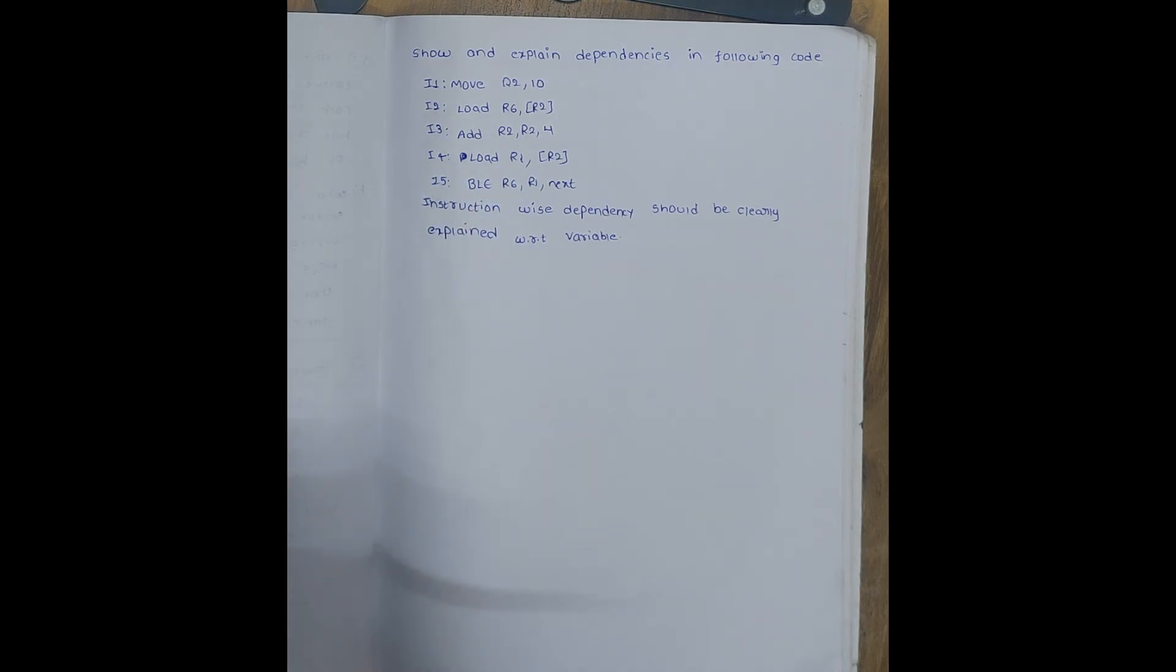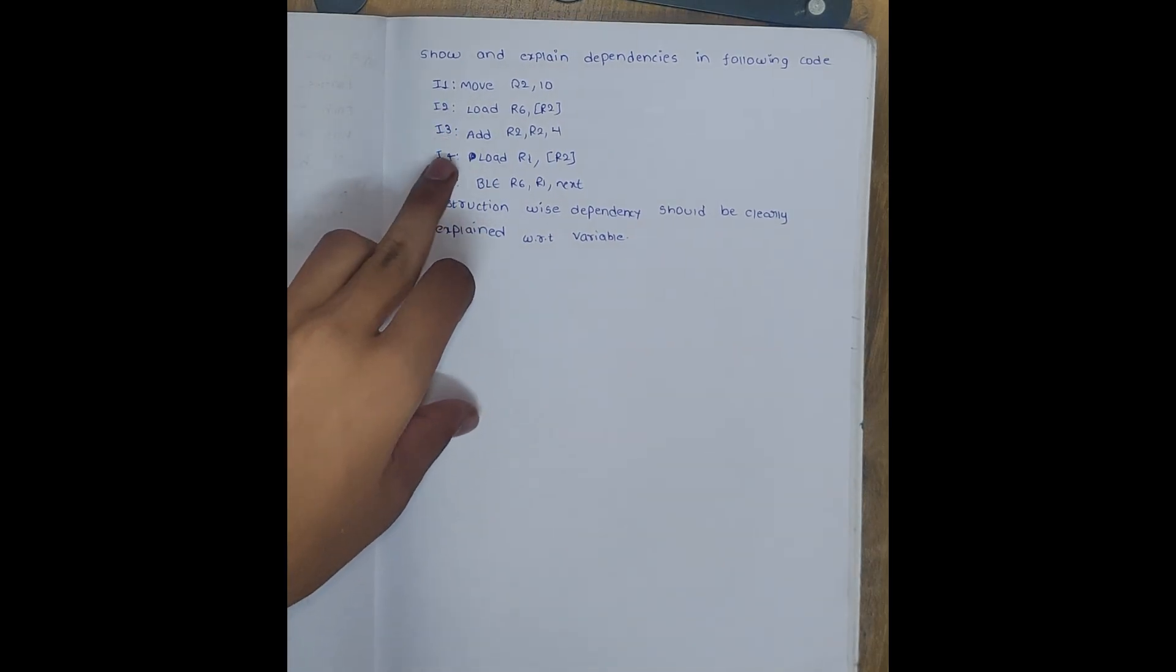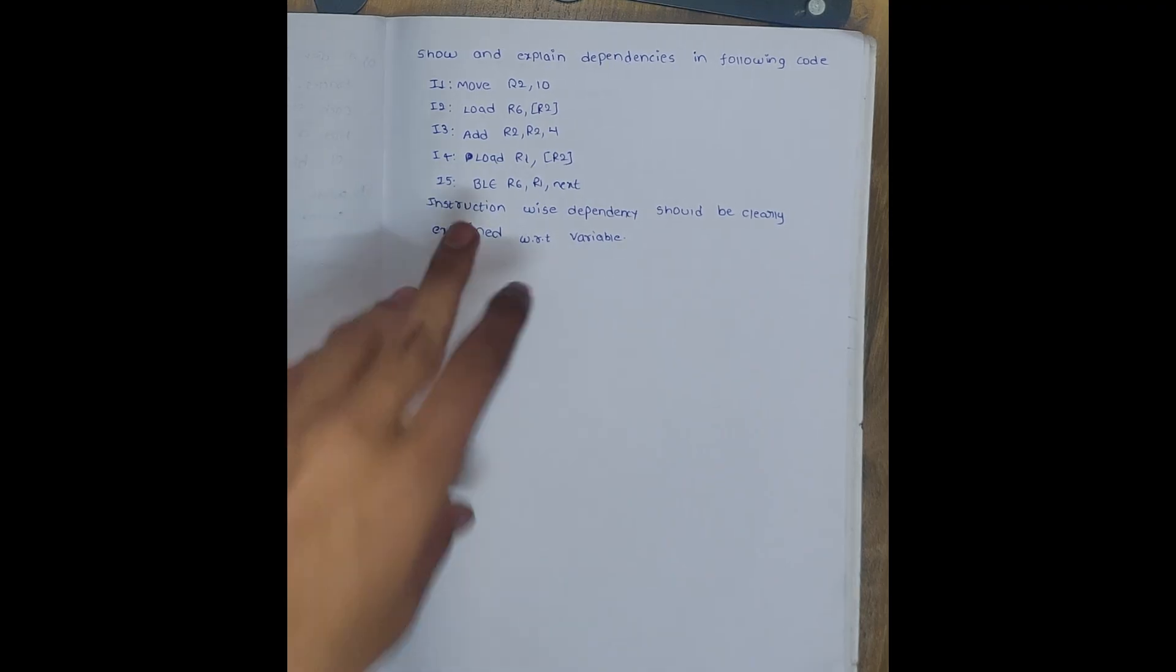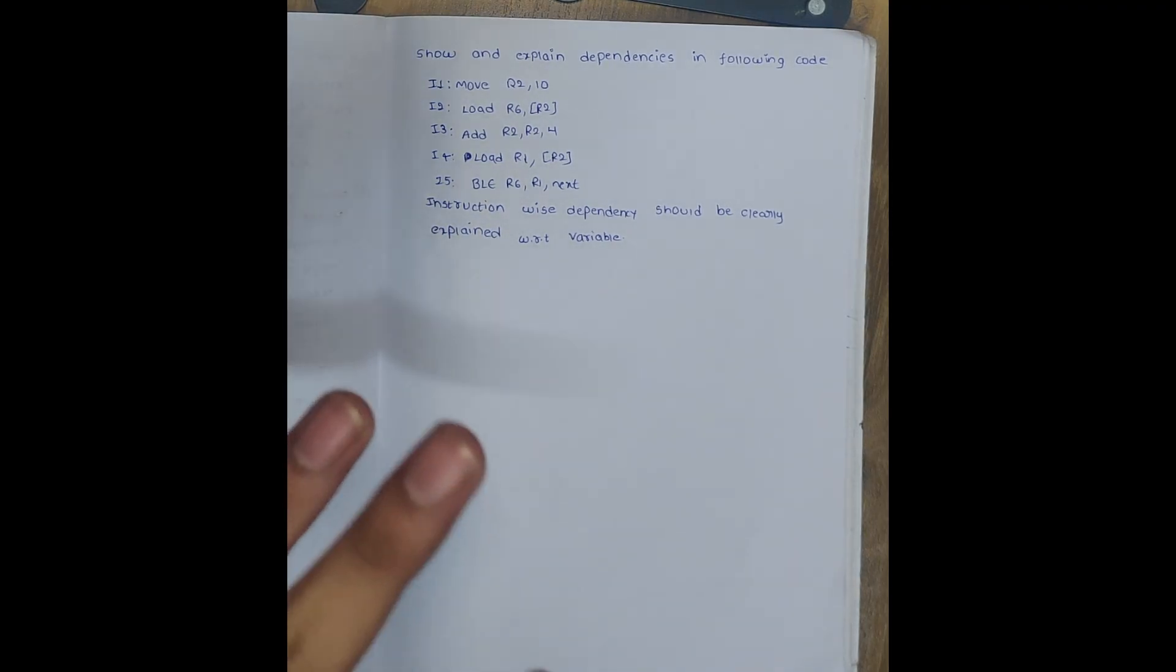The question is: show and explain dependencies in the following code. We have to identify what the dependencies are and explain them. These are instructions 1, 2, 3, 4, and 5. There are five instructions - we have to show and explain the dependencies instruction-wise with respect to the variables.